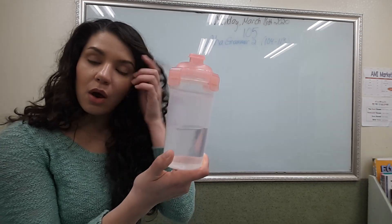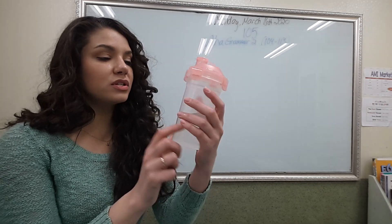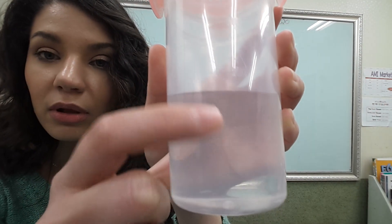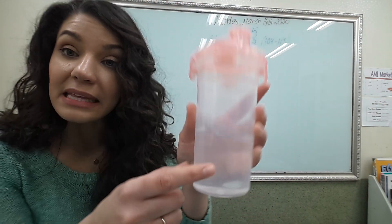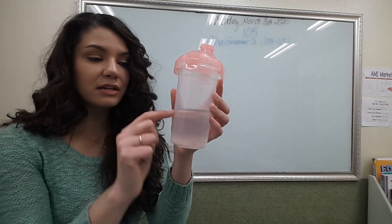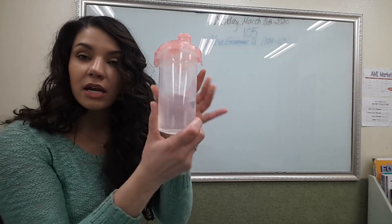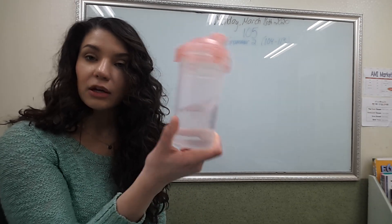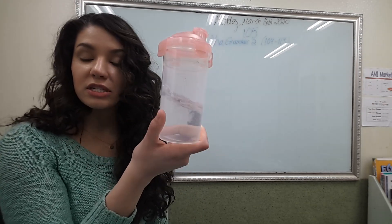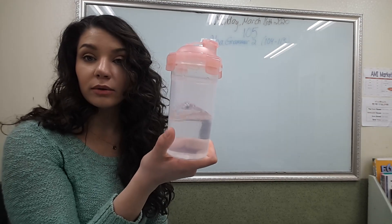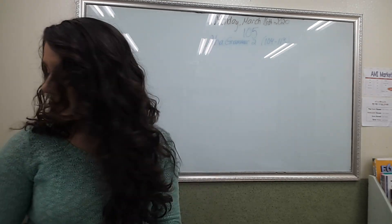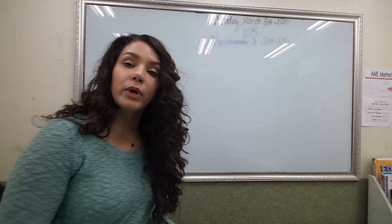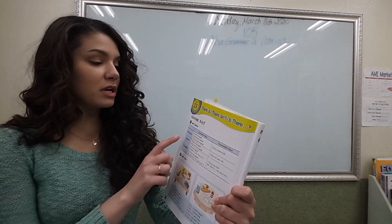You can only count a measurement of water, for example how many liters of water, but you can't count an unknown amount of water because it's a liquid. So we don't say 'waters,' we just say 'water' — I have some water. That's a non-count noun.